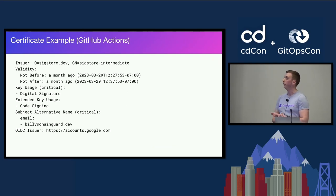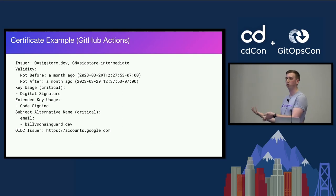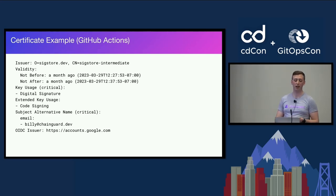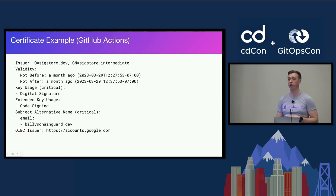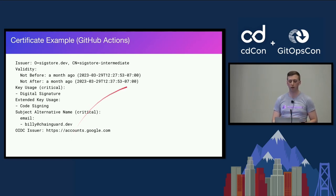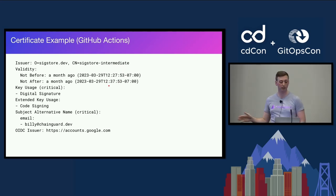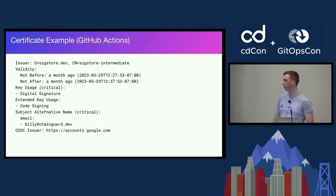Here's an example certificate from a commit I pulled myself. For human workflows, it really comes down to: what's your email and where was this issued from? In this case, we have my email billy@chainguard.dev, and this was issued by G Suite — accounts.google.com. Look at the not-before and not-after: it's only valid for 10 minutes and only to be used for code signing, not for arbitrary web hosting or anything else.